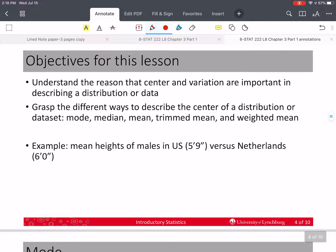I want you to be able to really understand that the center and variation are important in being able to describe a distribution or a data set. And I want you to grasp how we can describe the center of a distribution or data set using these measures: the median, the mode, the mean, and some modifications of the mean called the trimmed mean and the weighted mean.